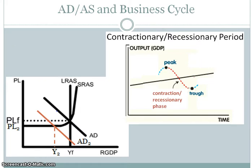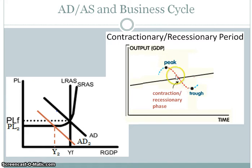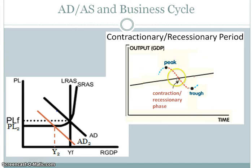We can also connect the ADAS model with the business cycle. There are two major phases of the business cycle. The one we're looking at here is the contractionary phase, where you have GDP going down. It's not necessarily a recession, because a recession requires two consecutive quarters of negative GDP — this could be just one stage of negative GDP growth. You can represent that with the ADAS model, where you have a decrease in aggregate demand, so you're not at that full employment level of output. This shows that the price level is going down and unemployment is going up, because you can't produce as large an output as before. Remember, there's always an inverse relationship between GDP and unemployment.